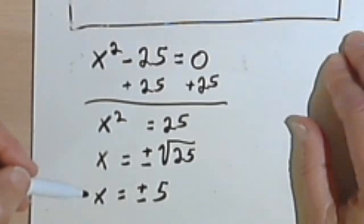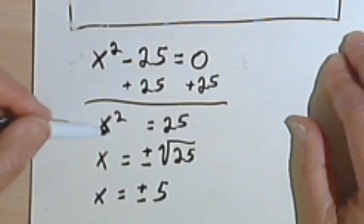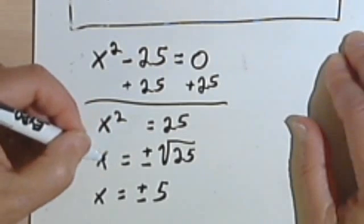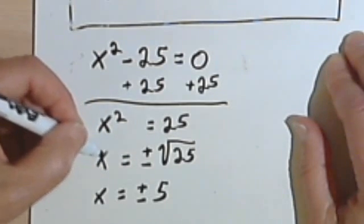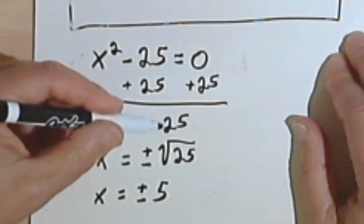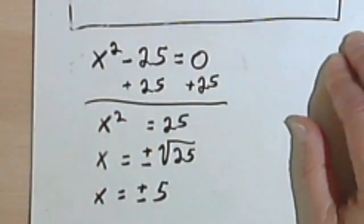So what you're doing, the basic method, is isolate the variable, the x squared in this case. So you have the x squared on one side, you have your constant number on the other. Then take the square root of the x squared, which will be x, and the positive and negative square roots of the constant. And then find out what that square root is.